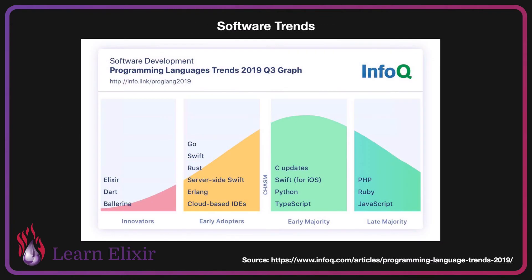Looking at the InfoQ graph, you can also see that in 2019 Elixir was marked as an innovative language, which can help you in a few ways. Talented Elixir developers are harder to come by, which means that the possibility of working remotely is often a lot higher, and you'll also get paid a premium because your skills are kind of niche. As Elixir gets adopted and becomes more popular, you'll be postured as a more experienced Elixir developer having used it for so long.